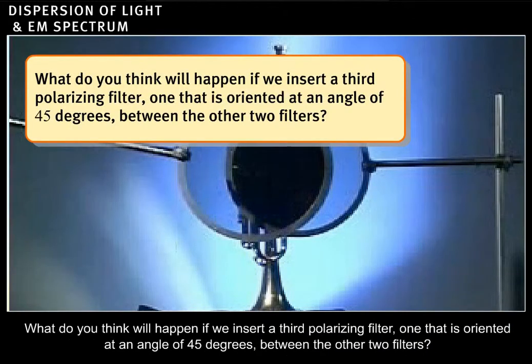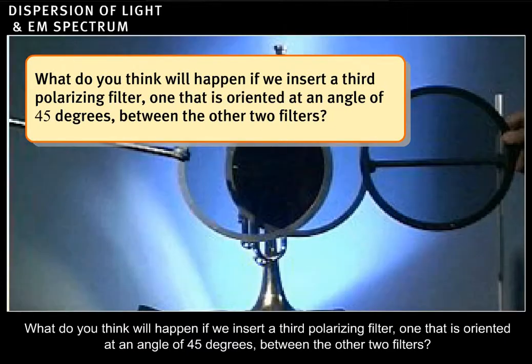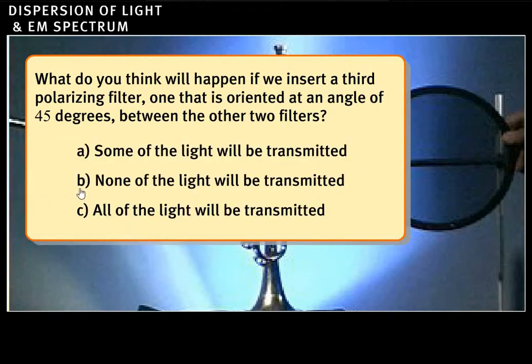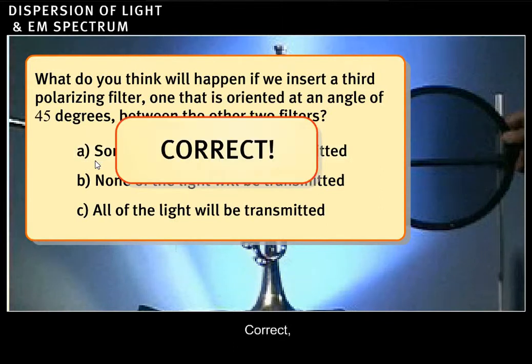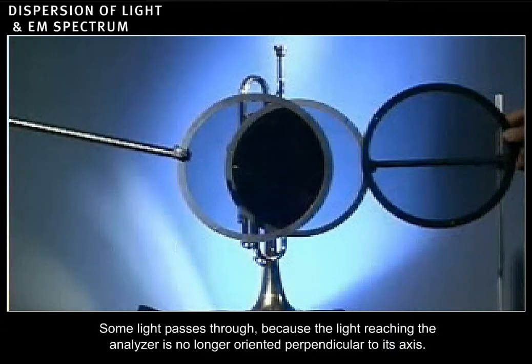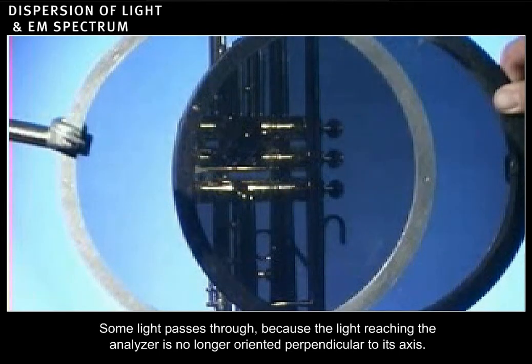What do you think will happen if we insert a third polarizing filter, one that is oriented at an angle of 45 degrees between the other two filters? Correct. Some light passes through because the light reaching the analyzer is no longer oriented perpendicular to its axis.